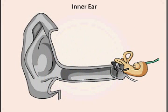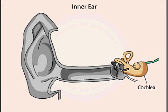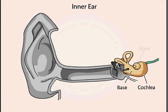The complex structures of the inner ear convert sound into neural activity. In mammals, the auditory portion of the inner ear is called the cochlea, a coiled structure. The region nearest the oval window membrane is the base of the spiral, and the other end, or top, is referred to as the apex.